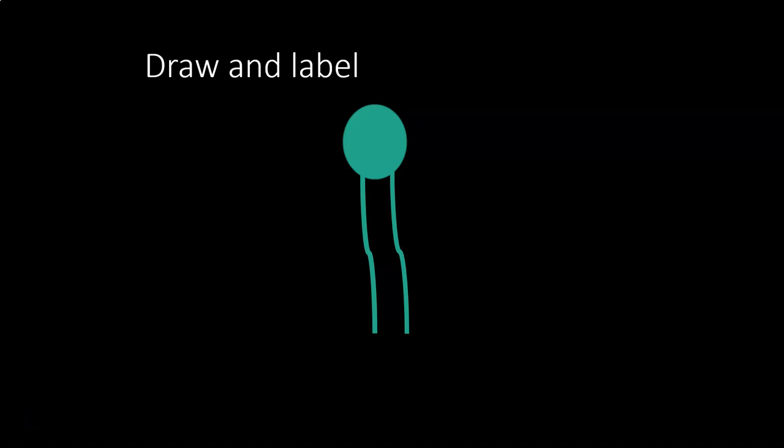We're going to be picking up right after the glycocalyx in the chapter three notes in this video. So where we're at is draw and label one phospholipid. Here's what you're doodling: it's a ball with two little tails.